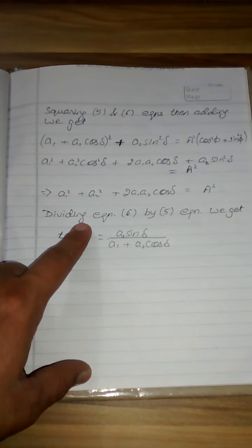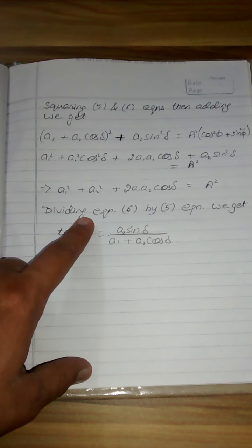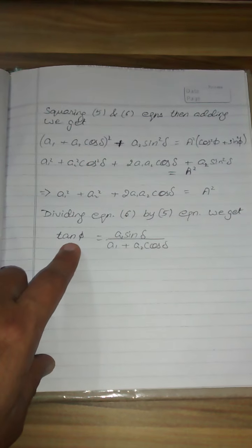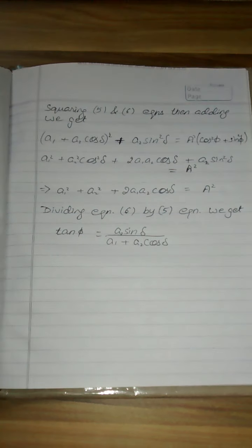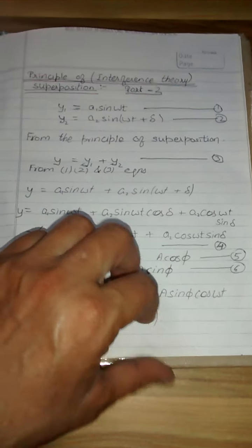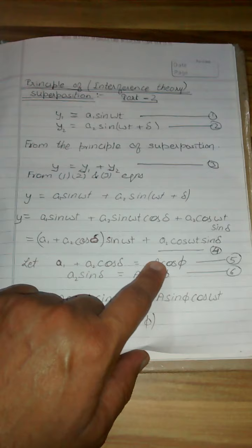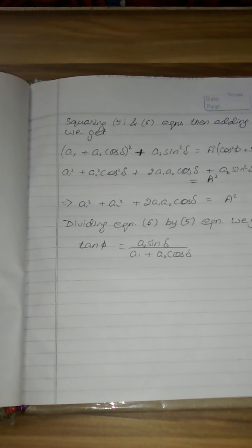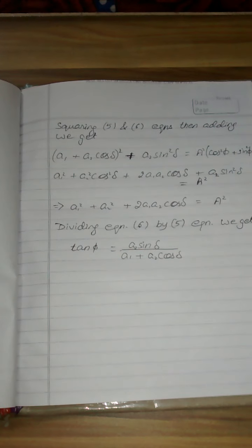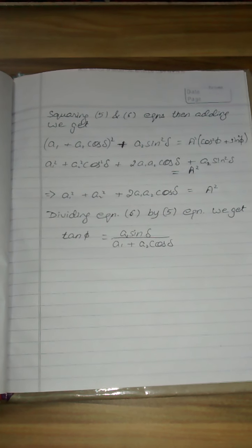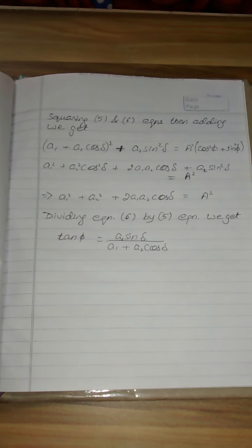The intensity of the light obtained at that point, and phi is the phase difference. We calculate the phi value by dividing the fifth equation by the sixth equation, and we get phi and A values. To understand physics easily, please subscribe to my channel so that physics becomes easy to understand and remember. Thank you.